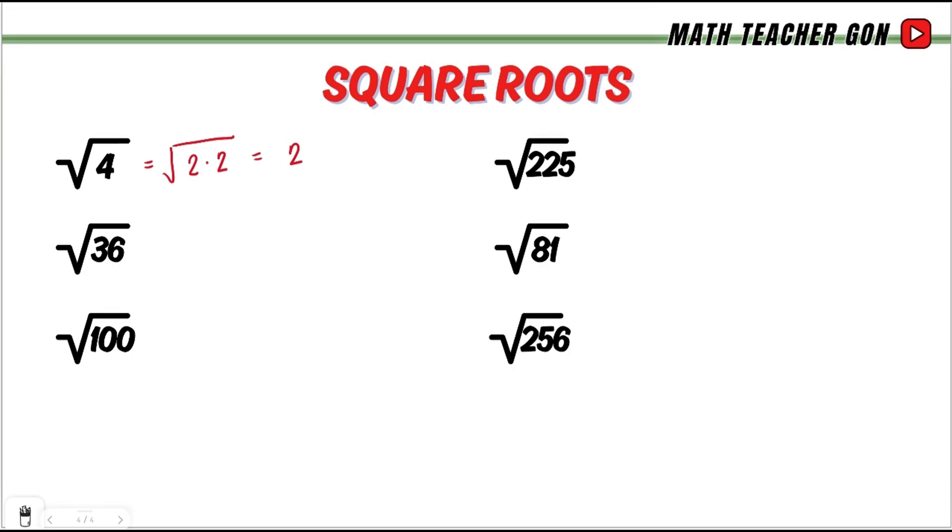Next, square root of 36. Again, let's think of numbers that when we multiply by itself, the result is 36. That is 6 times 6. And that is 6.